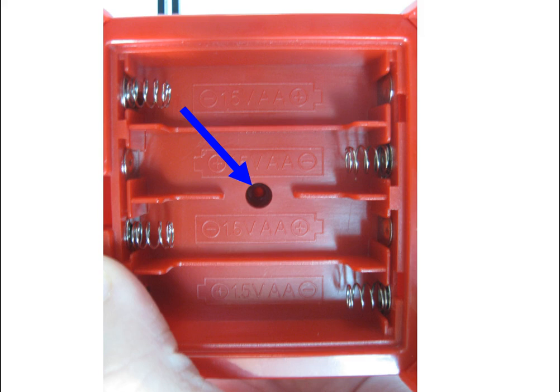Carefully flip the theremin over to look at the battery cartridge. Be sure not to bend the antenna while you do this. Take the last screw from the kit, which should be a relatively large screw, and screw the top and bottom parts of the theremin together by screwing this screw into the hole being pointed to by the blue arrow. Hold the top and bottom parts together with your other hand while you fasten the screw in tightly.